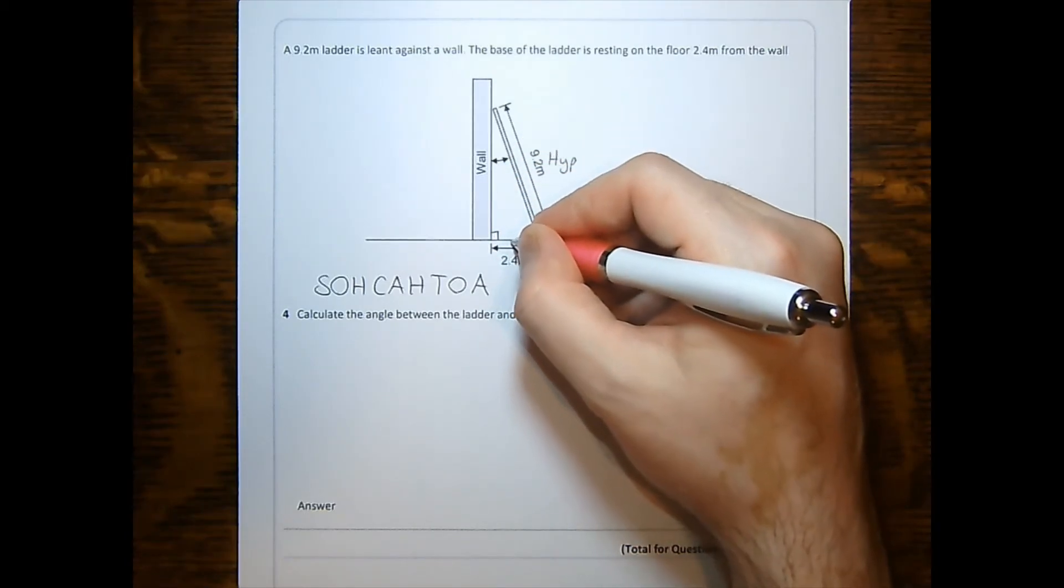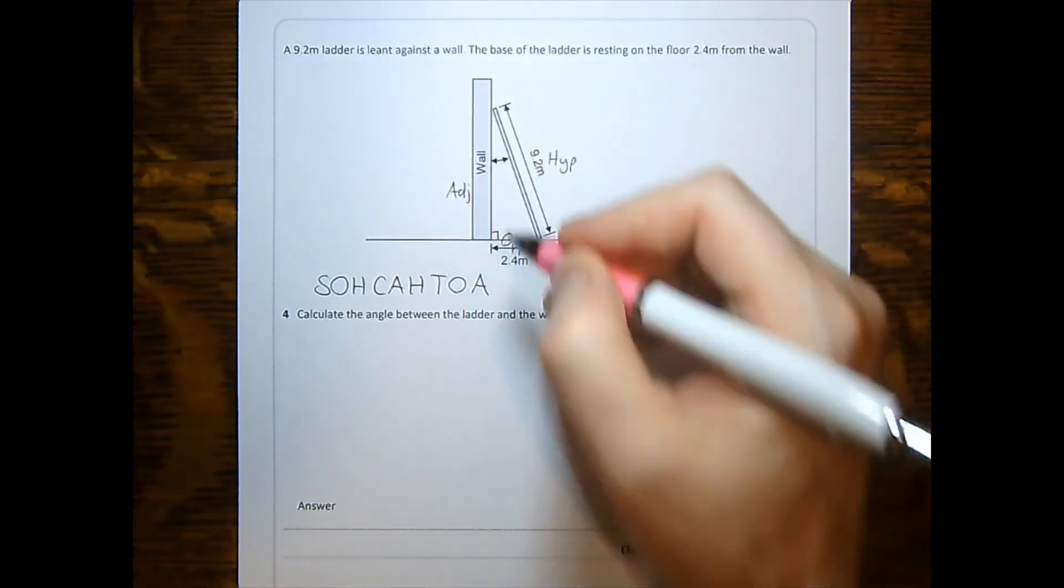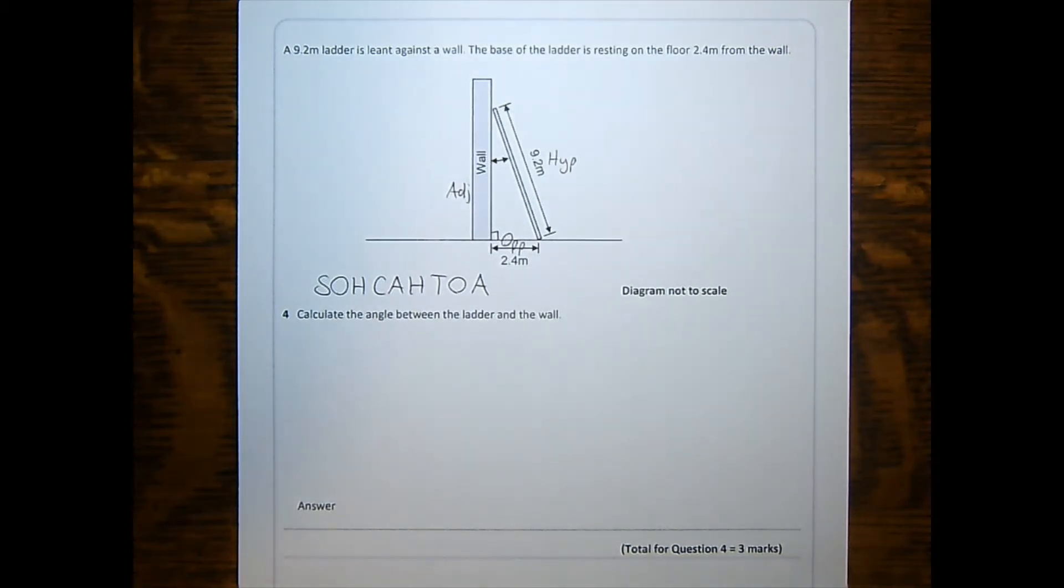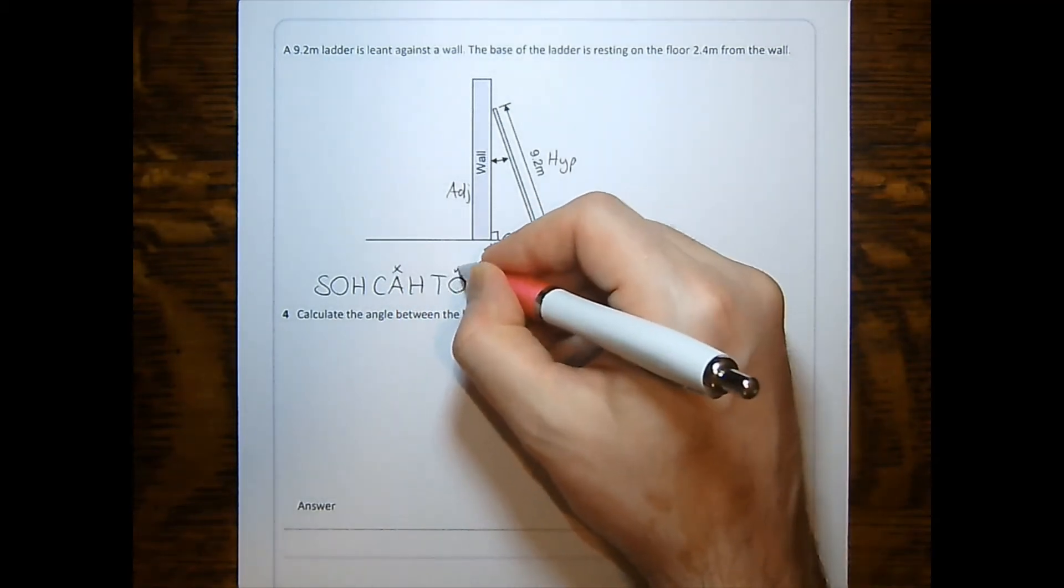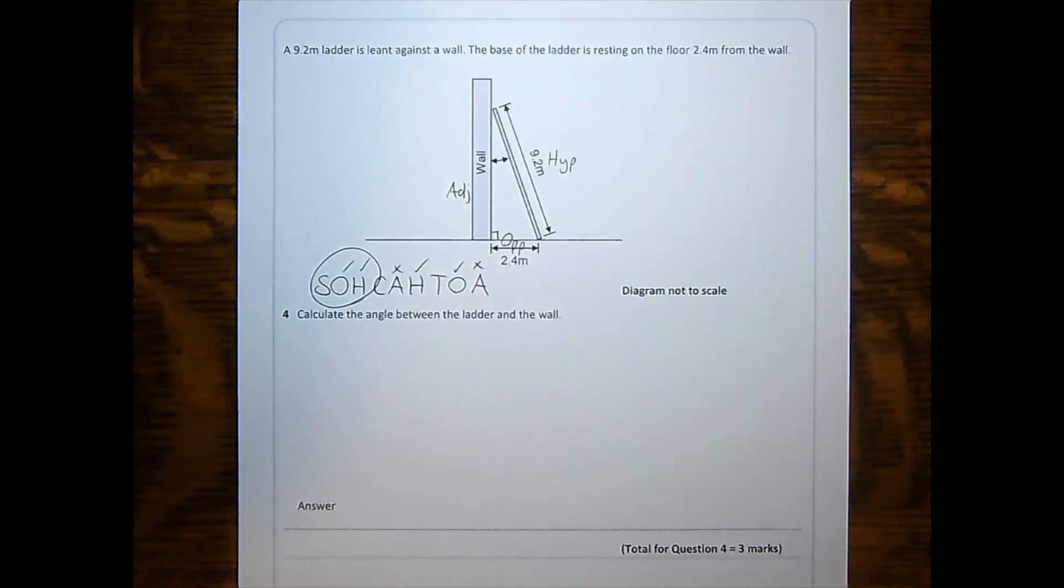That makes this the opposite, and the wall is therefore the adjacent since it's next to the angle. We don't have the adjacent, we've got the opposite in the hypotenuse. That means we know we're using sine.